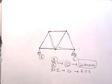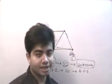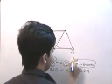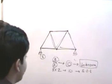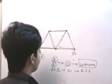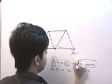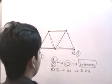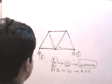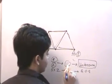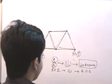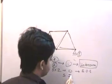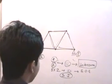Now let us see how we can make this structure statically indeterminate. One way is to replace the roller support with a hinge support. If I do that, I will have two plus two, which equals four support reactions, plus seven unknown member forces, giving eleven unknowns but only ten equations of equilibrium. Since we cannot solve all the unknowns using equilibrium alone, this becomes a statically indeterminate structure.